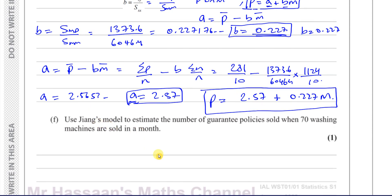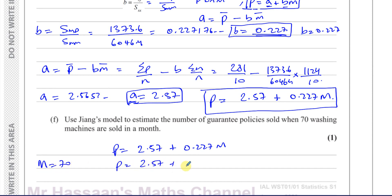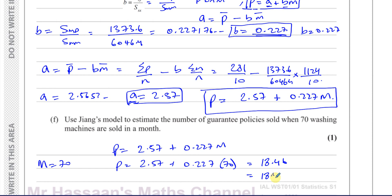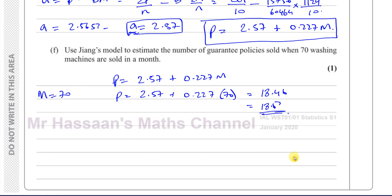Using Jiang's model to estimate the number of guarantee policies sold when 70 washing machines are sold: P = 2.57 + 0.227 × 70, which gives 18.46. So approximately 18.5 policies. That's part F done.